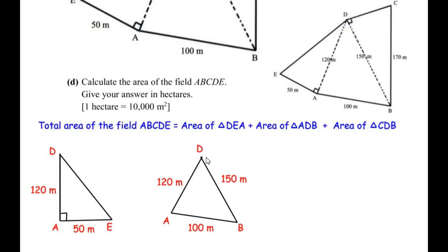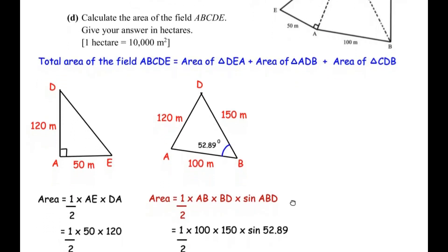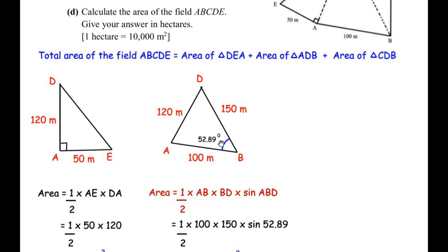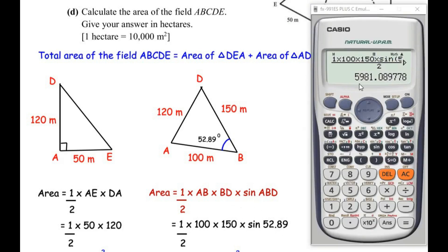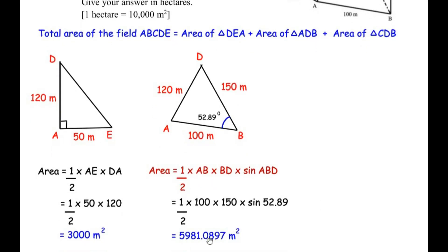Now triangle ADB — this is not a right angle triangle. AD is 120, BD is 150, and AB is 100 meters. From sub-question B, angle B was 52.89 degrees. Using the formula: area equals one half times AB times BD times sine of angle ABD — that is one half times 100 times 150 times sine 52.89 — giving approximately 5981.0897 square meters.